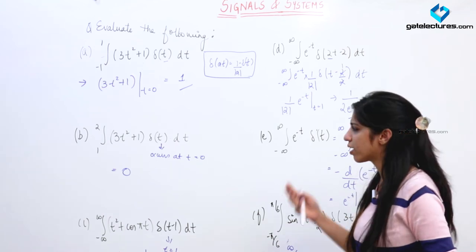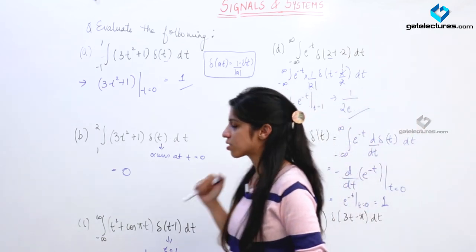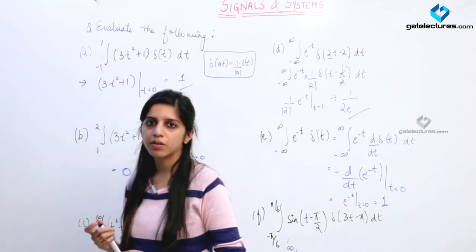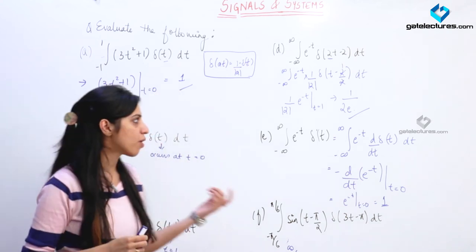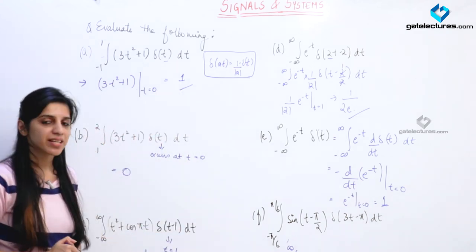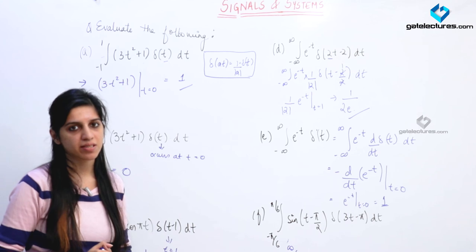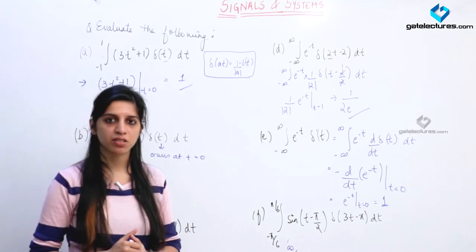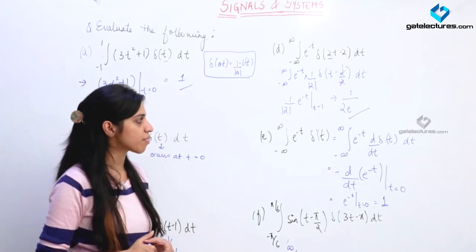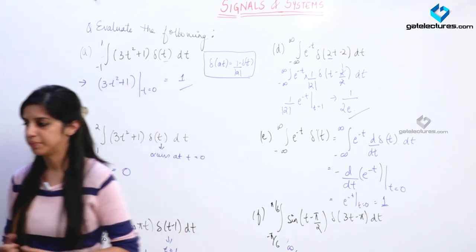These are some questions based on properties of the delta function that you may encounter. This is all about continuous time signals. Next we are going to look at some basic discrete signals, functions, and operations on discrete signals.